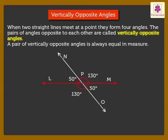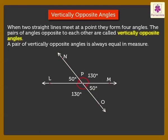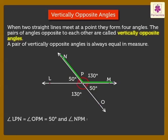Line LM and line NO meet at point P. Here, the two pairs of vertically opposite angles are: Angle LPN is equal to Angle OPM, which is equal to 50 degrees, and Angle NPM is equal to Angle LPO, which is equal to 130 degrees.